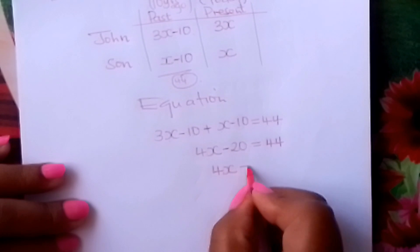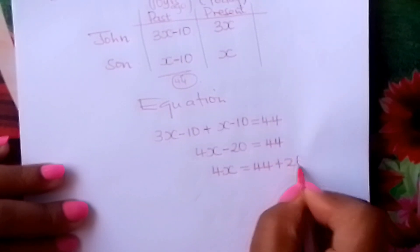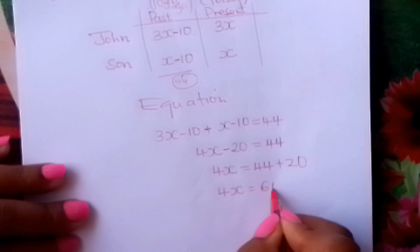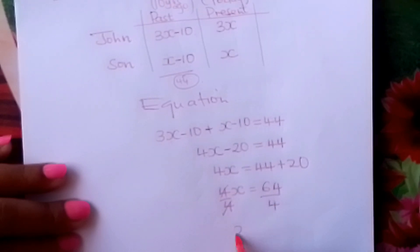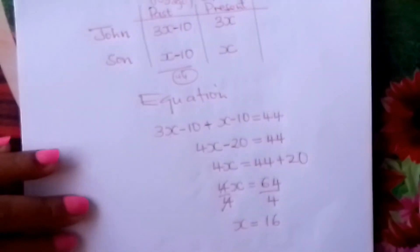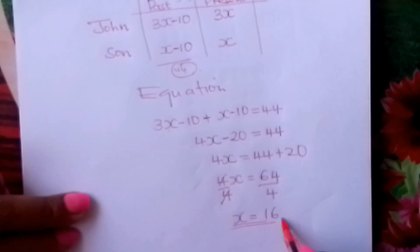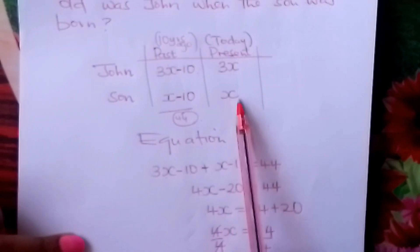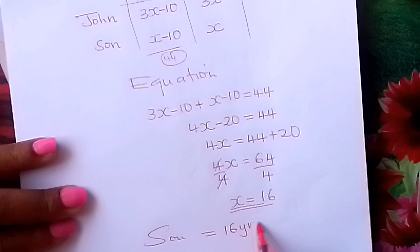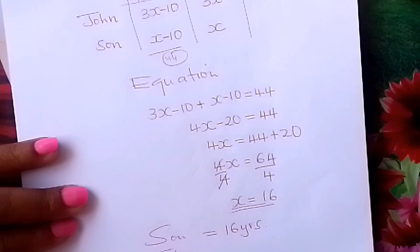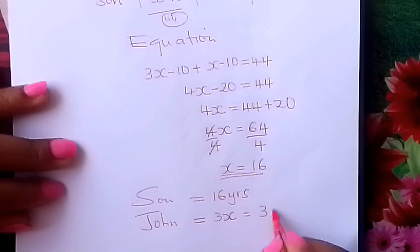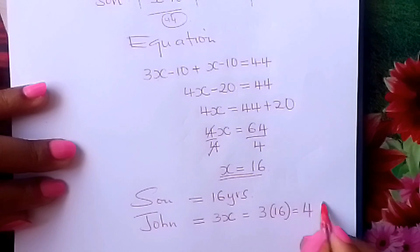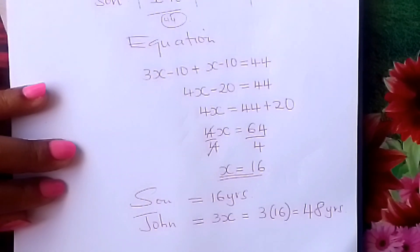Take negative 20 to the other side — it becomes positive 20. So 4x equals 64. Divide both sides by 4, and x equals 16. X was referring to the present age of the son, so the son today is 16 years. What about John, the father? The father is 3x, which equals 3 times 16, which is 48 years old.